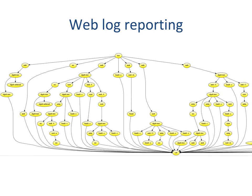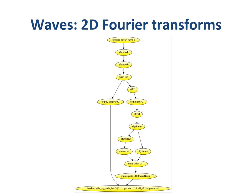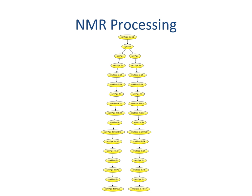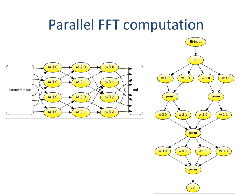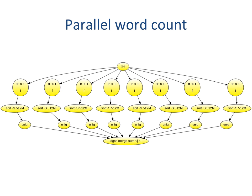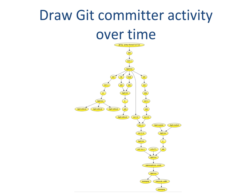DAX has been used for web log reporting, for processing data with two-dimensional Fourier transforms, for performing nuclear magnetic resonance processing, for running parallel fast Fourier transform computations, for distributed processing using the split-combined paradigm, and for combining separately drawn diagrams.